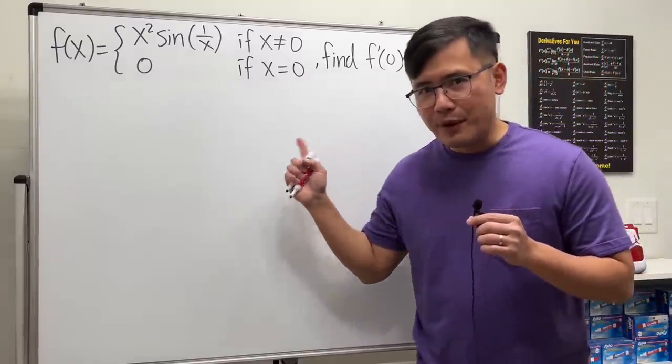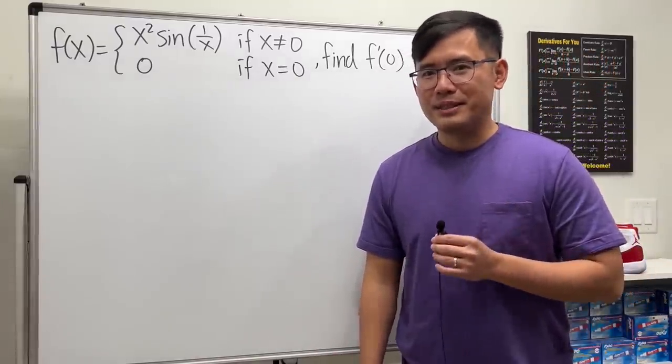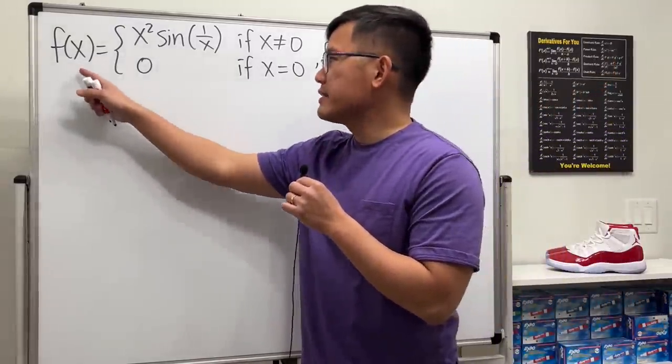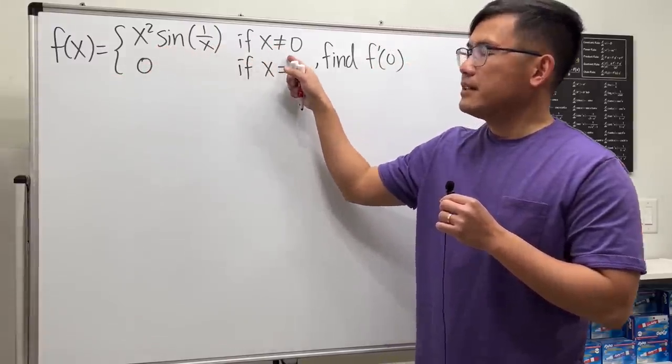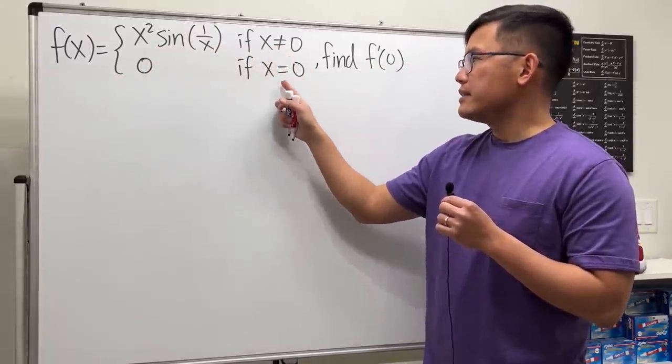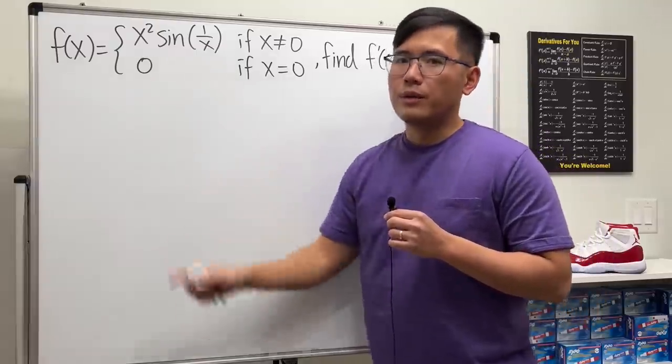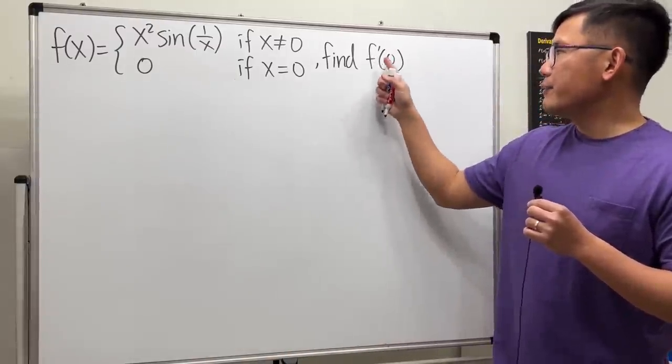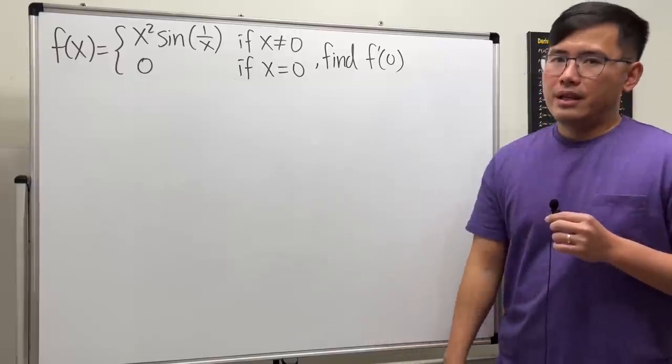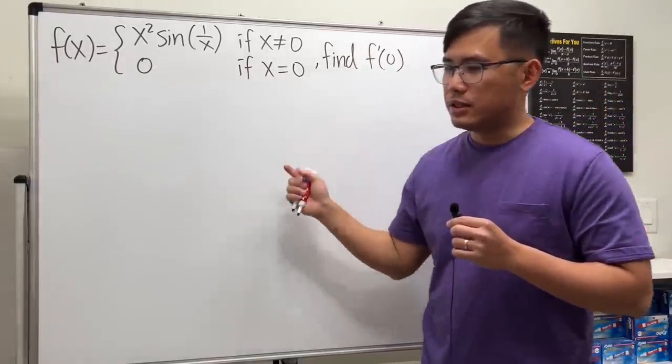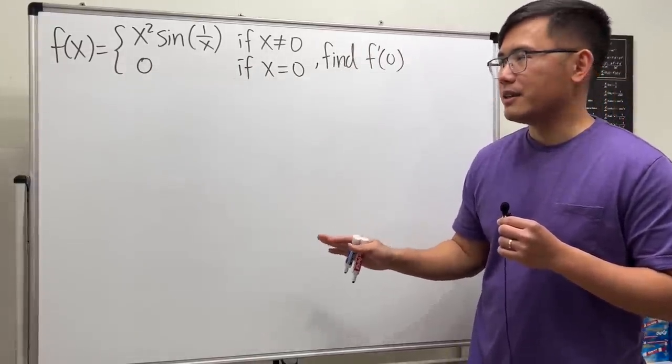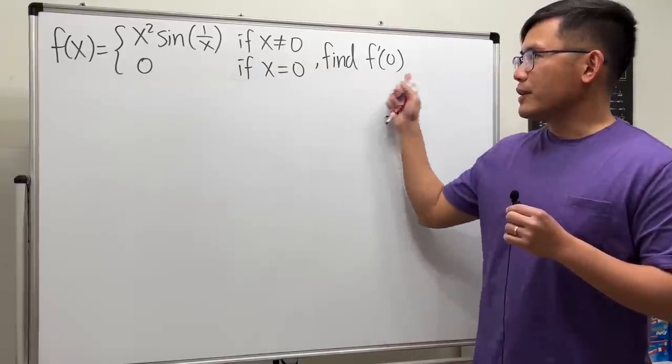This is a very classic question every calculus teacher and student should know. Here we have the function f(x) is defined to be x squared times sine of 1 over x, if x is not equal to 0, and if x is equal to 0, then we get 0. And our goal is to find f prime of 0. First off, I would like to just tell you f is indeed continuous at 0. Now, let's just focus on the derivative.